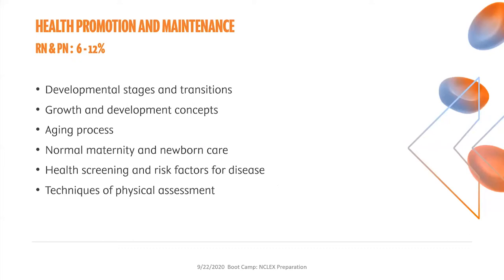The health promotion and maintenance category is 6% to 12% for both RN and PN. Content areas include developmental stages and transitions, growth and development concepts, the aging process, normal maternity and newborn care, health screening and risk factors for disease, and techniques of physical assessment. Be sure to review all of those areas and then review the test plan for any additional content in this area.